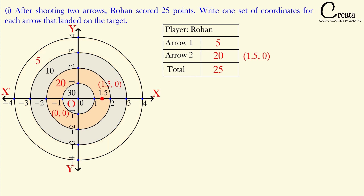Now assume the second arrow landed in the 5-point zone, specifically at the midpoint between radii 3 and 4. We can take that point as 3.5 units from the origin along the x-axis, with y-coordinate 0, giving coordinate (3.5, 0). You can choose any value like 3.2, 3.4, or 3.7 — as long as the coordinate falls within that zone. Part 1 is done.